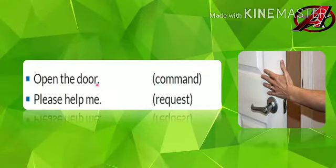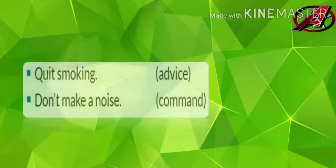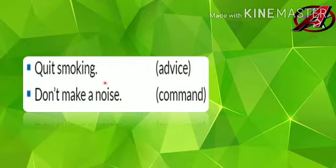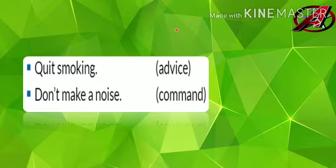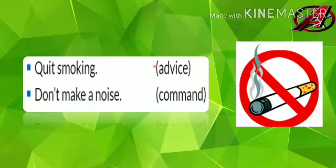'Please help me' is a request type imperative sentence. Next, we see two other examples. 'Quit smoking' — it's an advice. As we have learned, sentences which refer to any request, any advice, or any command are called imperative sentences. 'Quit smoking' is an advice. 'Don't make noise' is a command. These are some examples of imperative sentences.